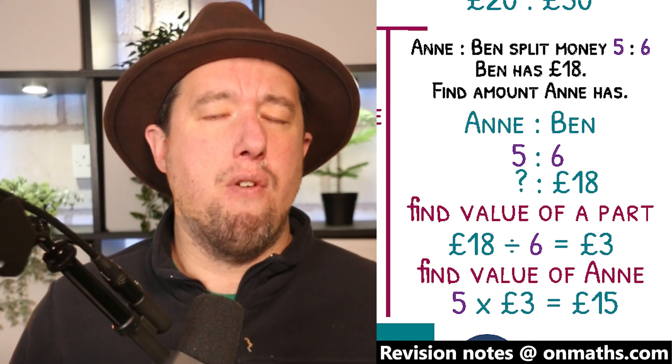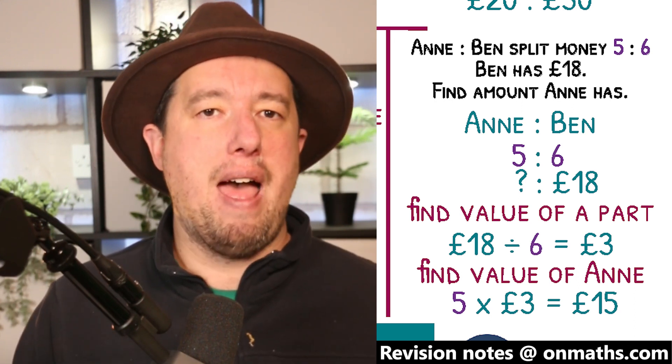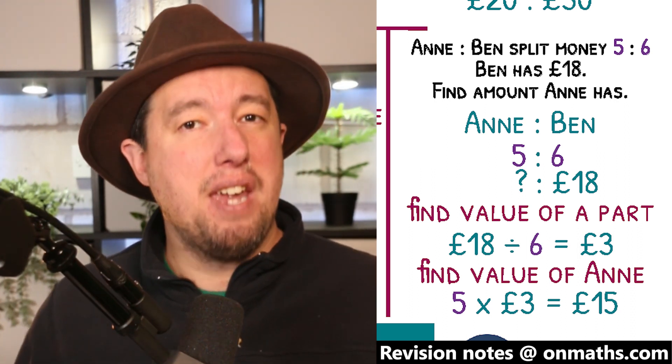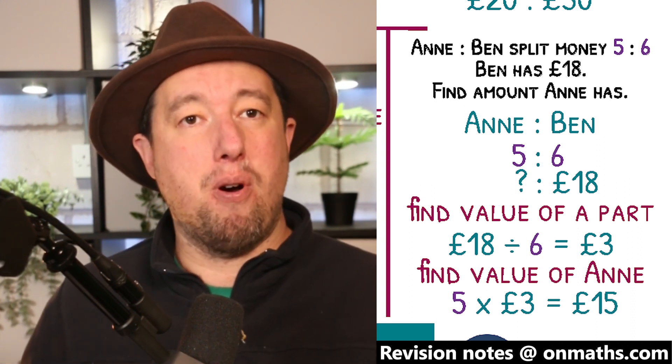Anne and Ben split money in the ratio of 5 to 6. Ben has £18. Find the amount Anne has. Going back to our boxes, Anne has 5 boxes. Ben has 6. We know Ben has £18 split among his 6 boxes.